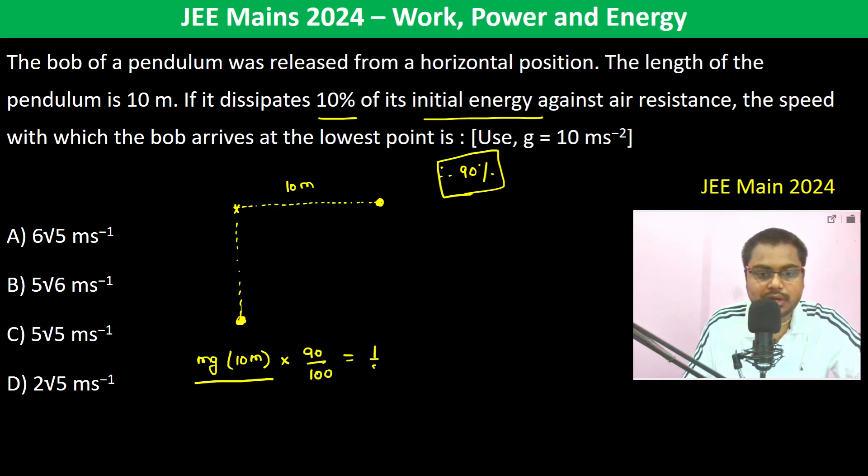M cancels out. Now v squared equals 2 times g. G has to be taken as 10 meter per second squared, times 10, times 90 divided by 100.